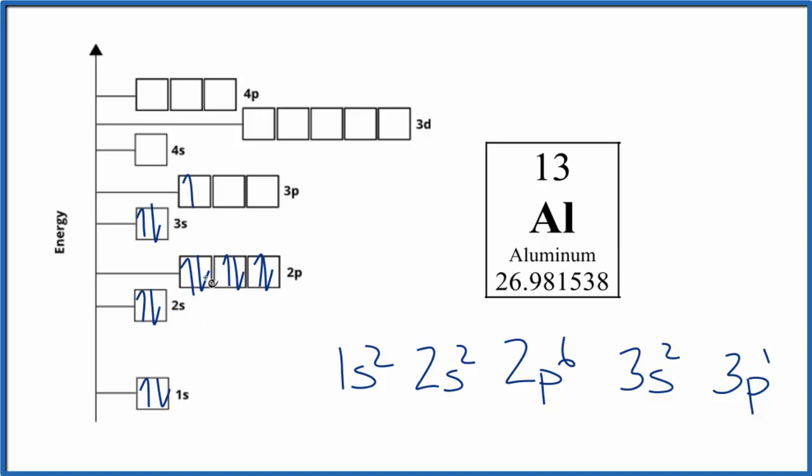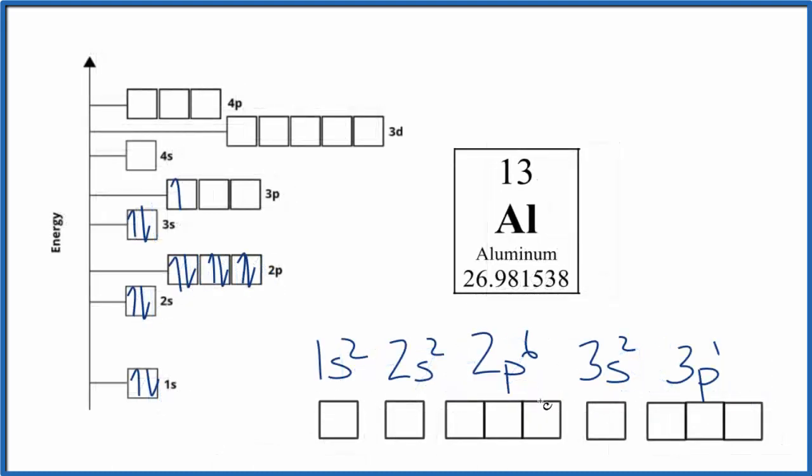So this is the atomic orbital diagram for aluminum. You could also write it like this here, and we just fill it in the same way. All of these are just representations of where the electrons are around the nucleus of the aluminum atom.